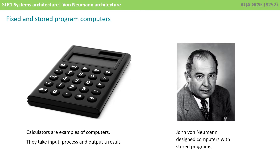The earliest computing machines had fixed programs. For example, a desktop calculator is an example of a fixed program computer — it can do mathematics, but it cannot be used for any other purpose. Changing a program of a fixed program machine requires rewiring or redesigning the machine. A stored program computer is one that has changeable programs. In 1945, the mathematician and physicist John von Neumann described the first design for modern computers that had stored programs. This way of designing computers became known as the von Neumann architecture.